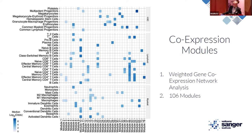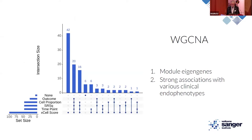The module eigengene is a convenient method of representing variation in the module — it is the first principal component of the genes in the module, representing the principal axis of variation. We saw strong associations of these eigengenes with clinical endophenotypes of interest: 28-day survival outcome, cell proportion, SRSQ — a factor associated with survival in sepsis — and time point, comparing day 5 eigengene values versus day 1.